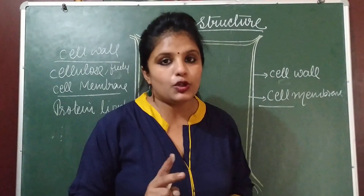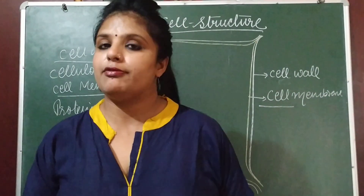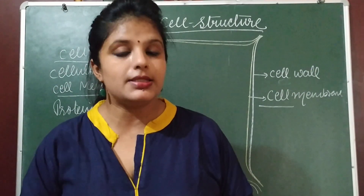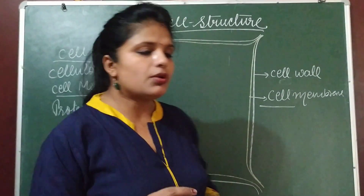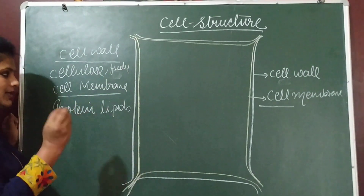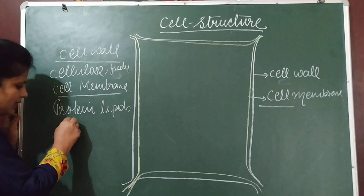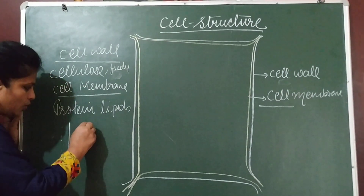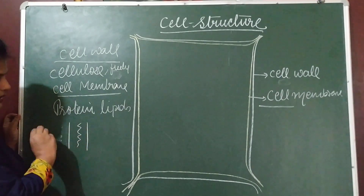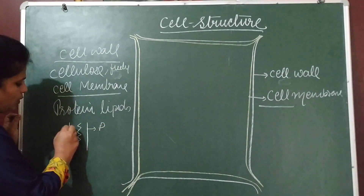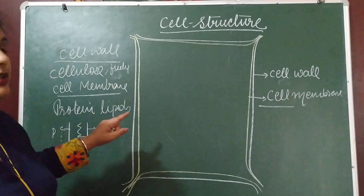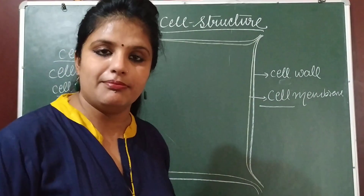For cell membrane there are two theories: one is the fluid mosaic model theory, and the other is the sandwich theory. In our syllabus we will discuss the sandwich theory. As per the sandwich theory, between two layers of protein there is a layer of lipid — that is called the sandwich model of the cell membrane.